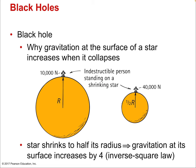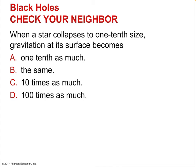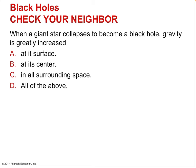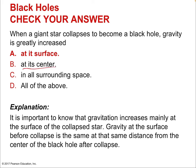Gravitation at a star's surface increases when it collapses because the same mass is in a smaller volume. When a star collapses to one-tenth its size, gravitation at its surface becomes a hundred times as much — it's proportional to the square of the inverse distance. When a giant star collapses to become a black hole, gravity is greatly increased at its surface. At its center, gravity would cancel out.